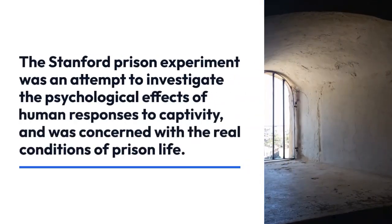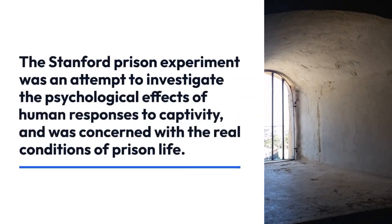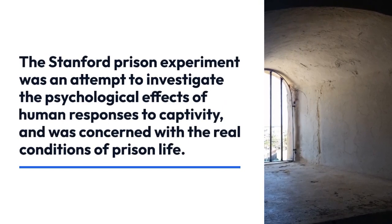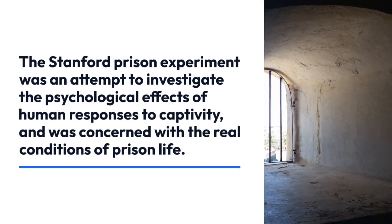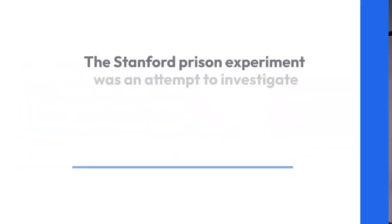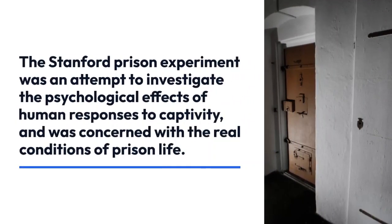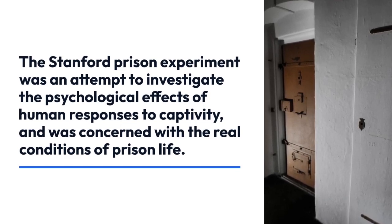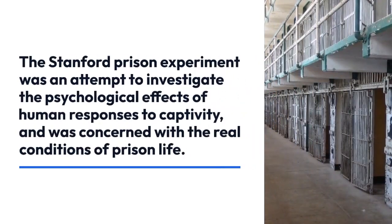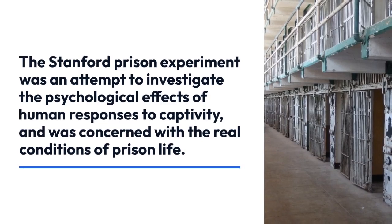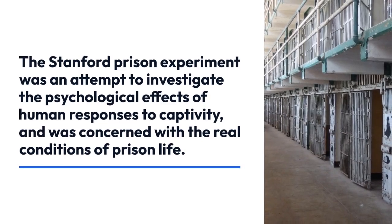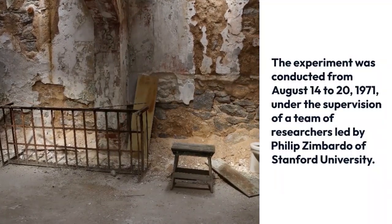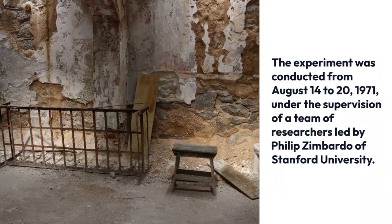The Stanford Prison Experiment was an attempt to investigate the psychological effects of human responses to captivity, and was concerned with the real conditions of prison life. The experiment was conducted from August 14 to 20, 1971, under the supervision of a team of researchers led by Philip Zimbardo of Stanford University. Volunteers played the role of guards and prisoners in a building that completely simulates a prison. However, the experiment quickly exceeded the limits of control and was stopped early.